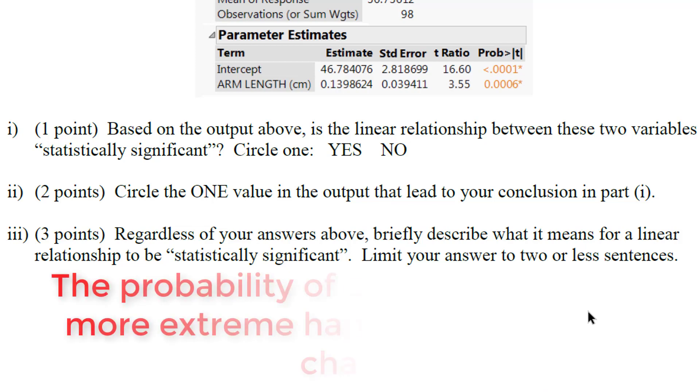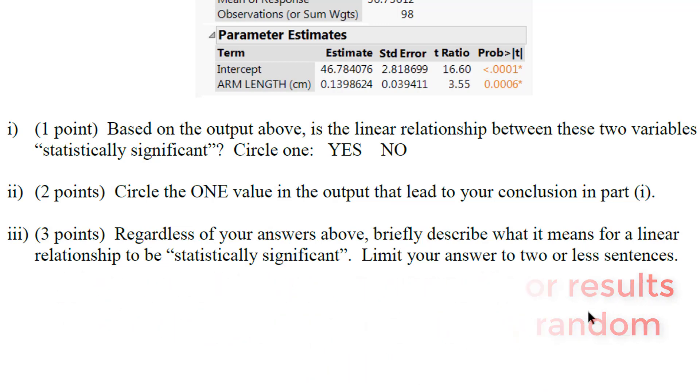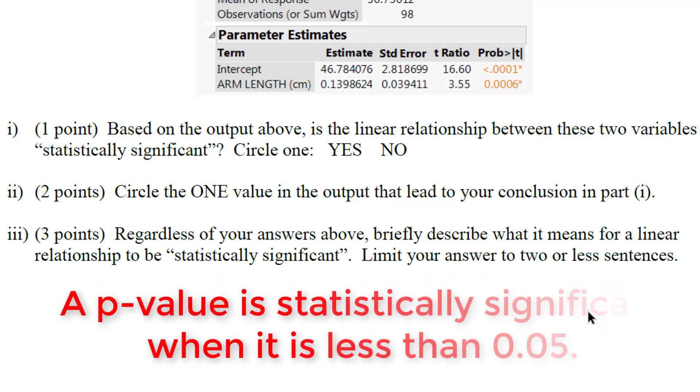A p-value is the probability of our results or results more extreme happening by random chance given that there is no association between the two variables. And as you'll notice we're talking about a probability here. So these probabilities are p-values.